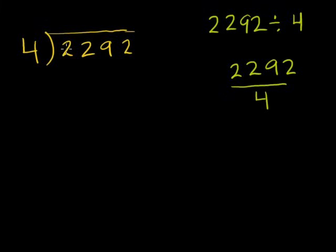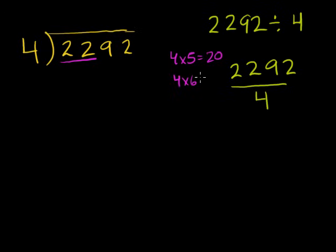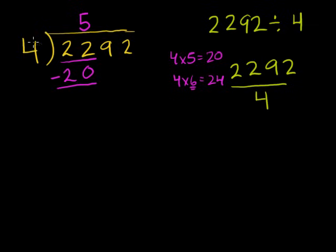So 4 goes into 2 how many times? It goes in 0 times. So let's move on to the 22. 4 goes into 22 how many times? 4 times 5 is equal to 20. 4 times 6 is equal to 24 — so 6 is too much. So 4 goes into 22, 5 times. 5 times 4 is 20, which is going to leave a little bit leftover, and then we subtract. 22 minus 20, well that's just 2.